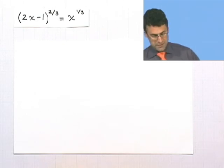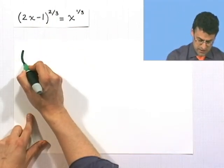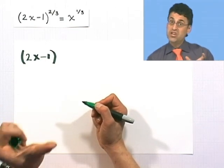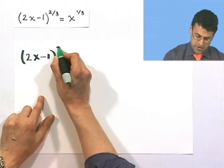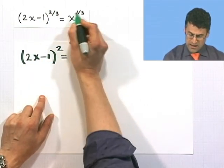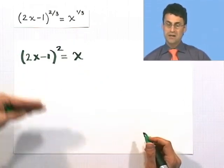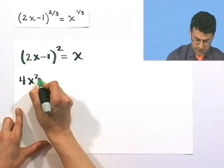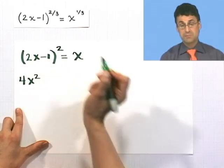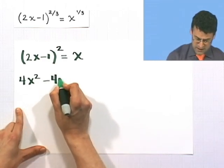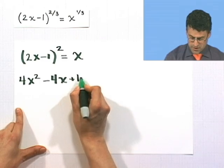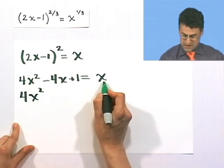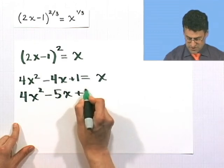When I cube both sides: on the left, a common mistake is to think everything disappears, but cubing only removes the denominator of 3 — the 2 in the numerator remains. So I get 2x minus 1 all squared equals x. Expanding: 4x squared, inside term negative 2x, outside term negative 2x combining to negative 4x, and negative 1 times negative 1 is plus 1. So 4x squared minus 4x plus 1 equals x. Subtracting x from both sides: 4x squared minus 5x plus 1 equals 0.